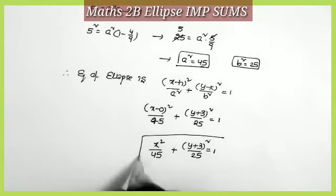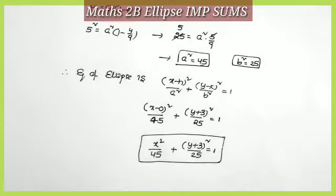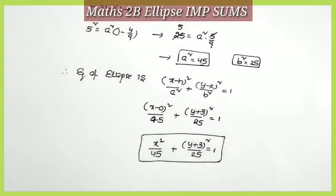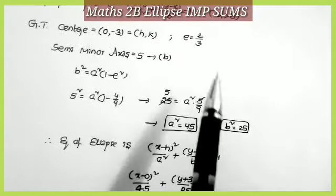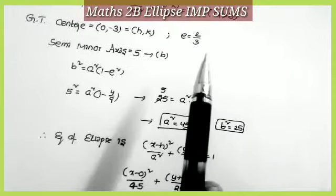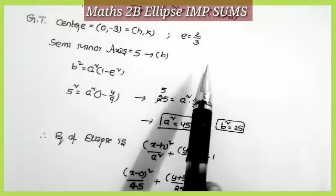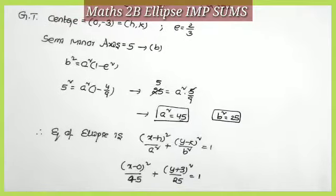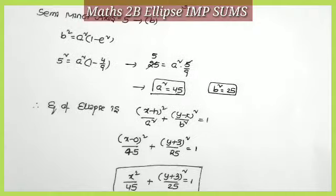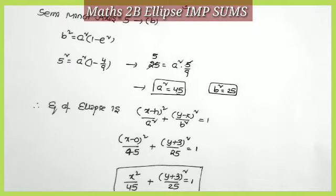This is the required equation of the ellipse. Note: if you take either the a > b case or the b > a case, the answers will differ but both processes are correct, and marks are awarded for either case.